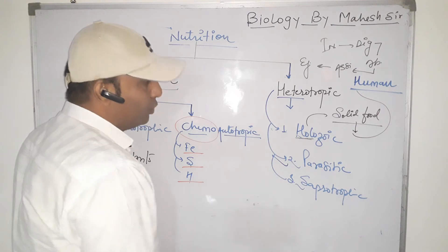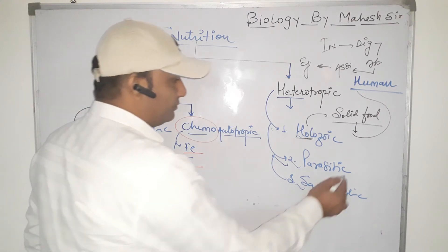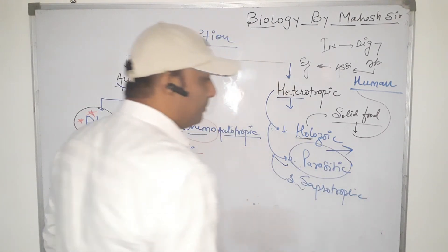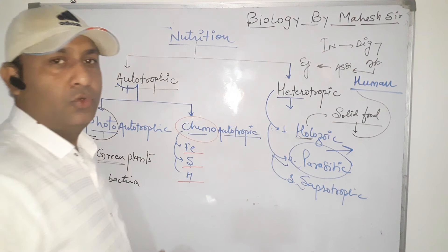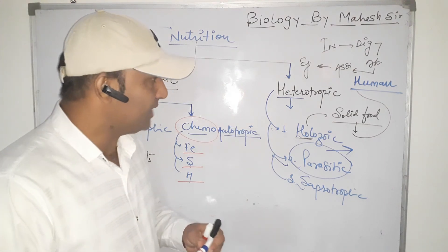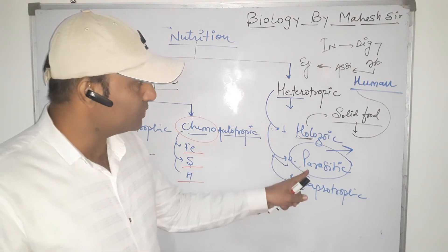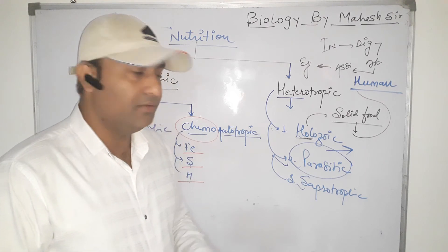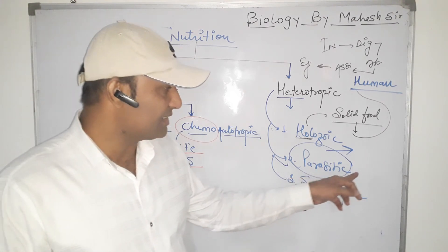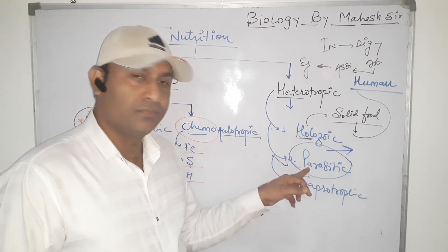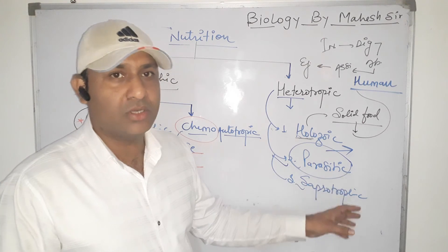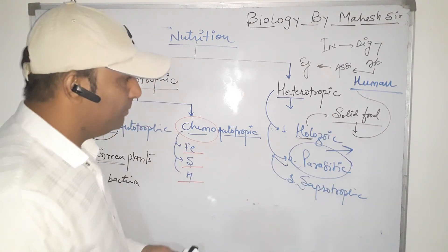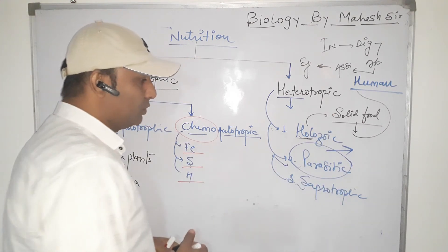The second type is parasitic mode of nutrition, in which an organism obtains already prepared or digested food from a host. All parasites fall into this category because they obtain prepared or digested food from their host. That is called the parasitic mode of nutrition.